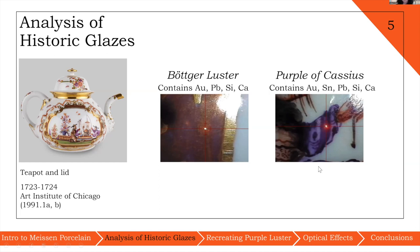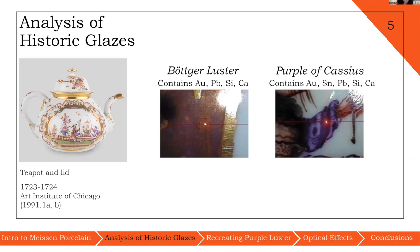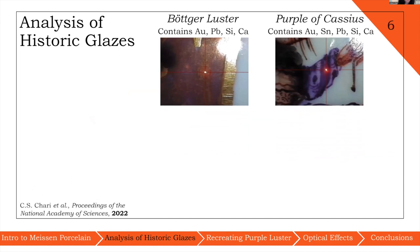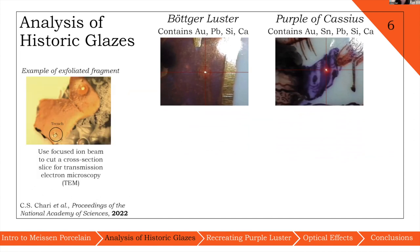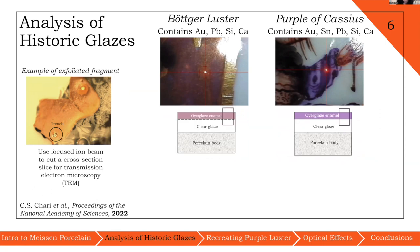Zooming in a little bit more carefully, we can see that within Böttger luster, we have more of a deep brown purple with iridescent effects in the form of these little gold specks. But in purple of Cassius, we have a different tone of purple that is not iridescent.